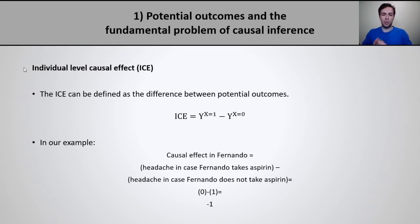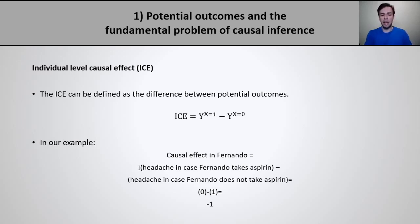Now we can use our knowledge on potential outcomes to define our very first type of causal effect: the individual-level causal effect, defined as the difference between two potential outcomes — y1 minus y0. In our aspirin example, this is the causal effect of taking aspirin on Fernando's headache status: Fernando's y1 minus Fernando's y0. In our example, those values are 0 and 1, so 0 minus 1 equals negative 1. The negative value simply indicates that the exposure prevented the outcome from happening, or caused outcome failure.